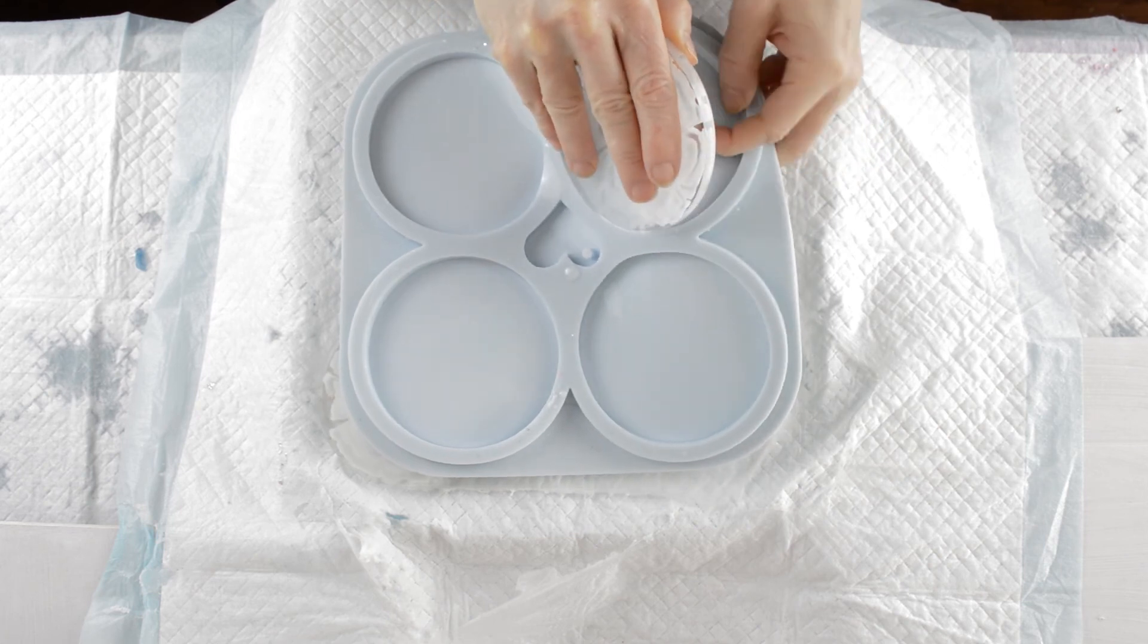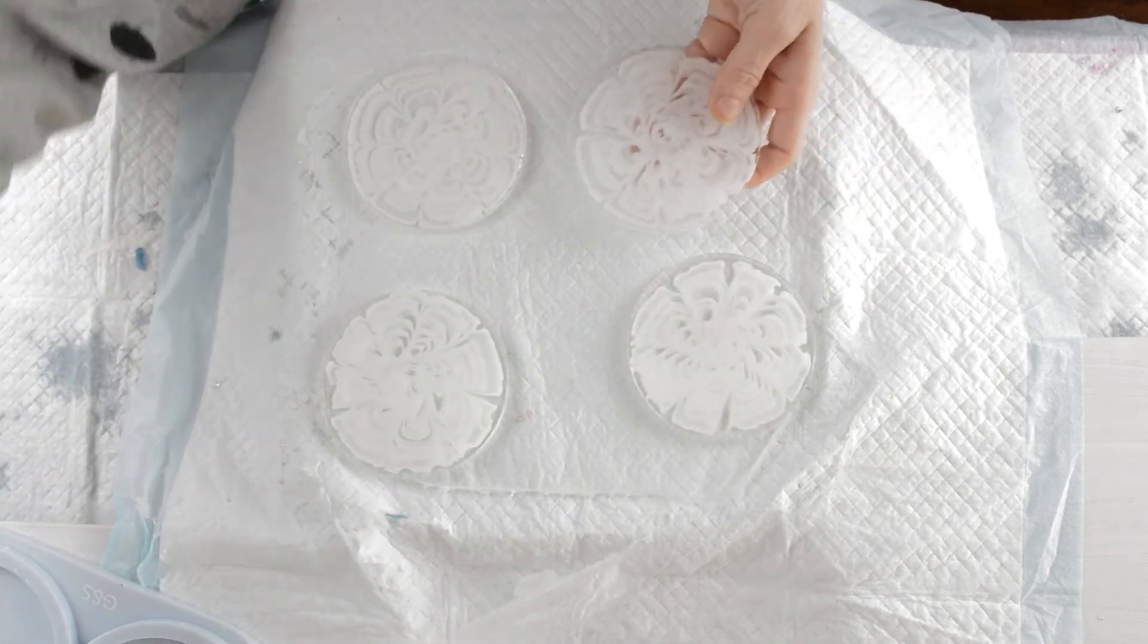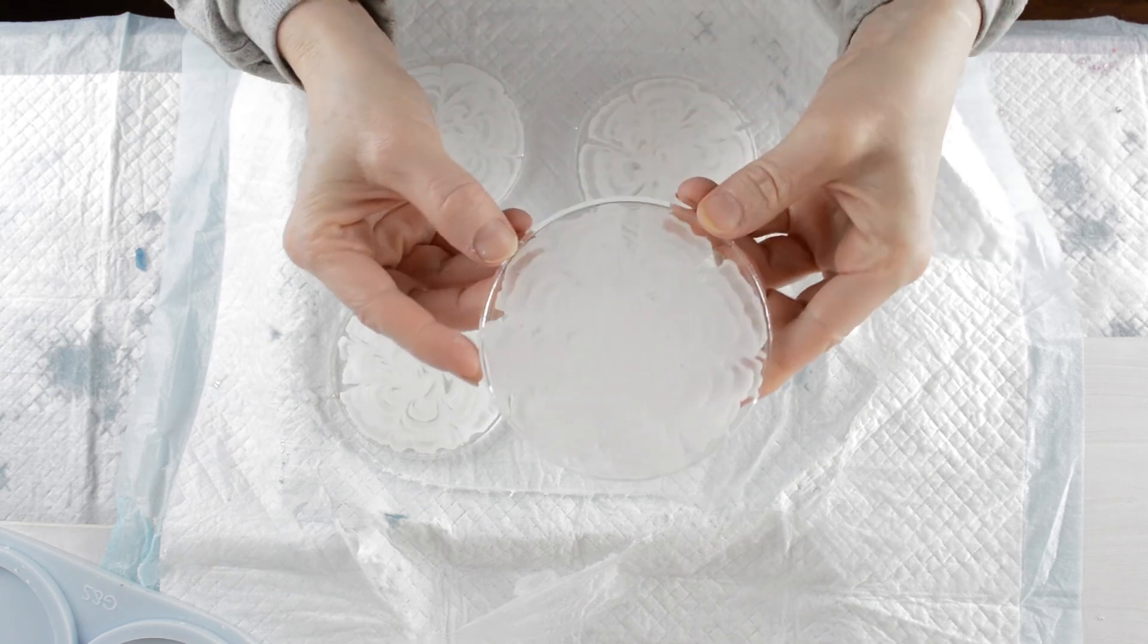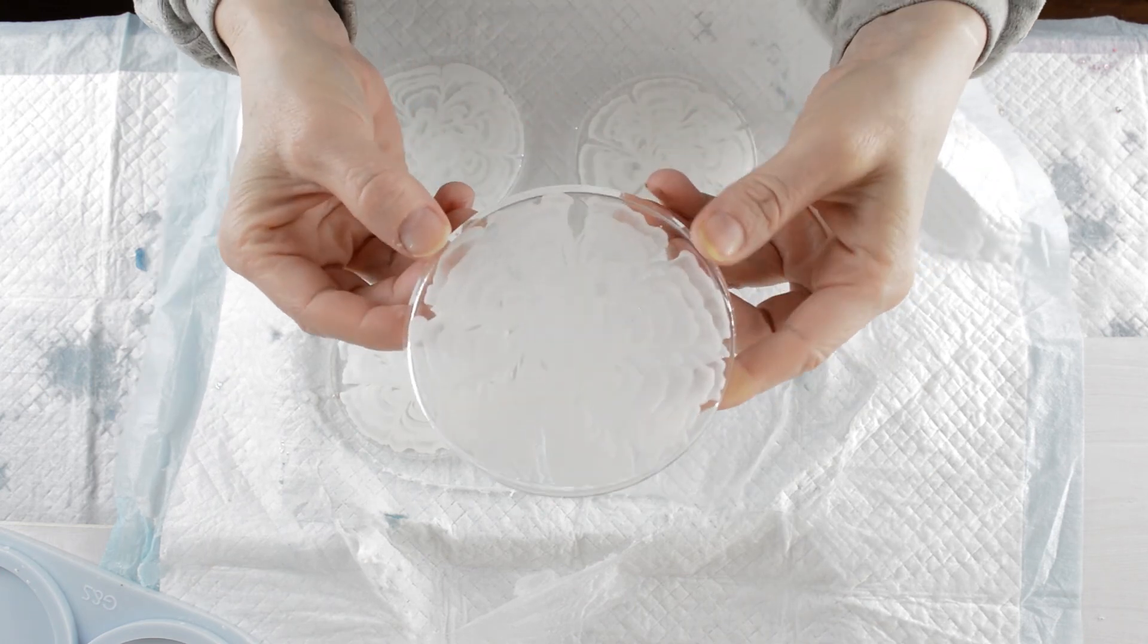And I only mixed the white pigment paste five minutes before I was ready to use it, although I made the resin for it at the same time as the rest of the resin. So there we are. You can see they've bloomed beautifully, those flowers.